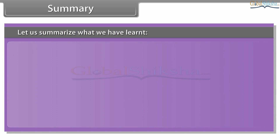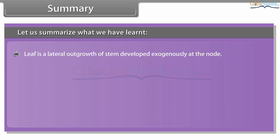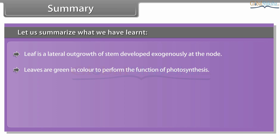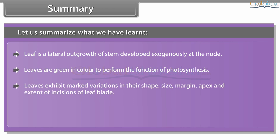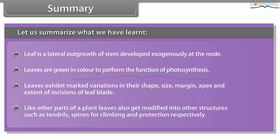Let us summarize what we have learned. The leaf is a lateral outgrowth of the stem, developed exogenously at the node. Leaves are green in color to perform the function of photosynthesis. Leaves exhibit marked variations in their shape, size, margin, apex and extent of incisions of the leaf blade. Like other parts of a plant, leaves also get modified into other structures such as tendrils and spines for climbing and protection respectively.